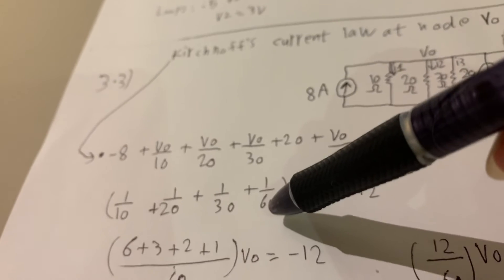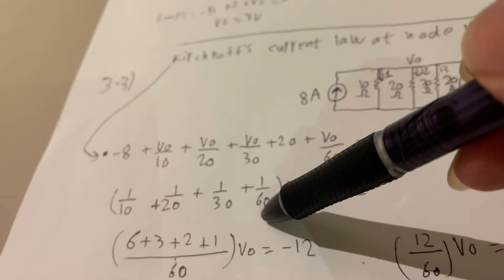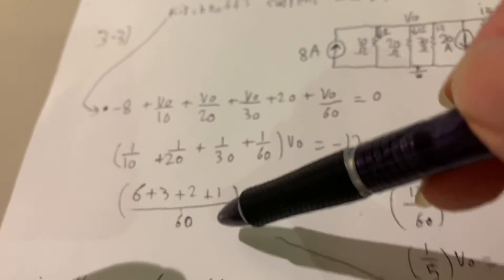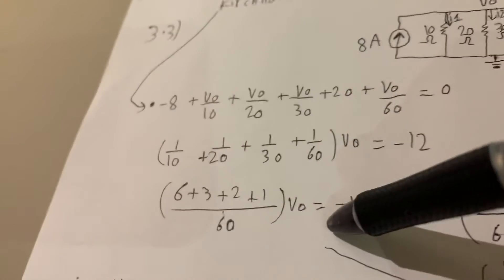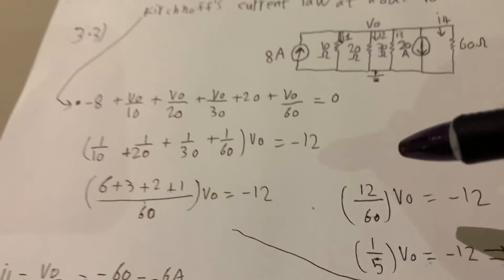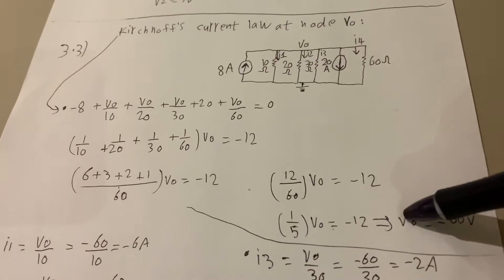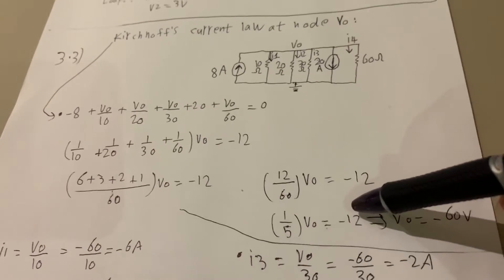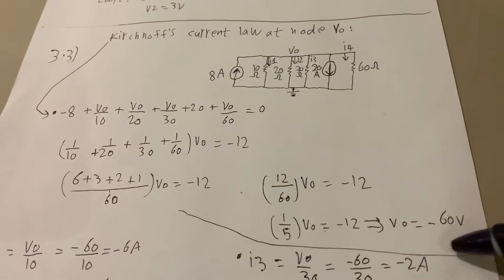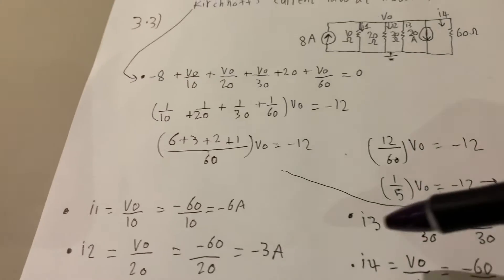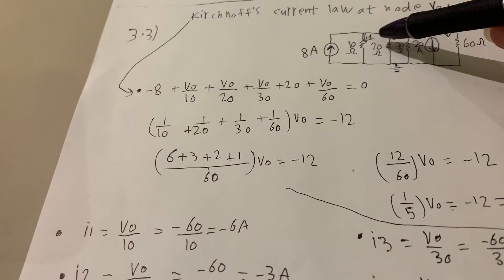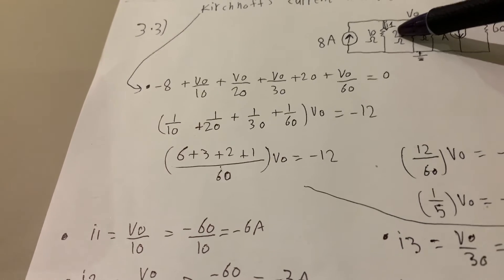We sum up all the values and find a common denominator: 6 plus 3 plus 2 plus 1 over 60, which is equal to V0, which equals negative 12. Then we have 12 over 60 times V0 equals negative 12, so 1 over 5 times V0 equals negative 16 volts.